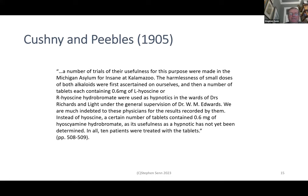This particular trial was carried out in the Michigan Asylum for Insane at Kalamazoo. The harmlessness of small doses was first ascertained on themselves, then patients received tablets containing 0.6 micrograms of L-hyoscine or R-hyoscine hydrobromide — probably the origin of Student's mistake, since he thought L was for left and R for right, whereas they actually stand for the Latin levo and racemate. A racemate is a mixture, so they were comparing the left-hand form to a mixture to determine how the right-hand form, which was unstable, differed.